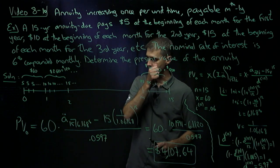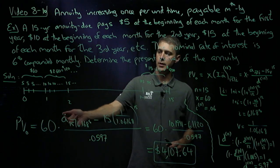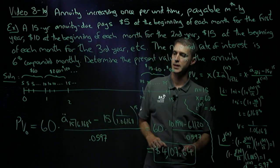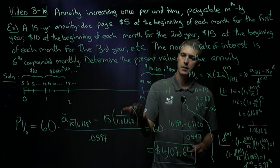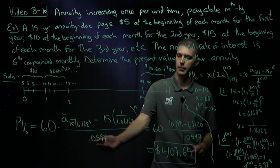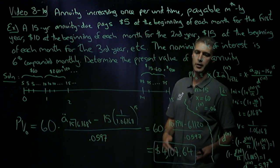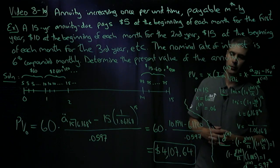So here is my actual calculation. My X is 60. Present value of a $1 payment of an annuity due for 15 payments at 6.168% per period. Minus 15 V^15 all over nominal discount rate compounded monthly. Those are my calculator values for each individual part truncated after 4 decimal places yielding a present value of $4,107.64.